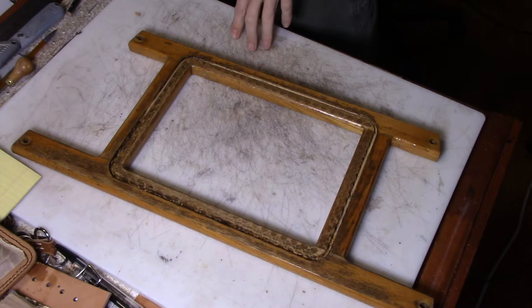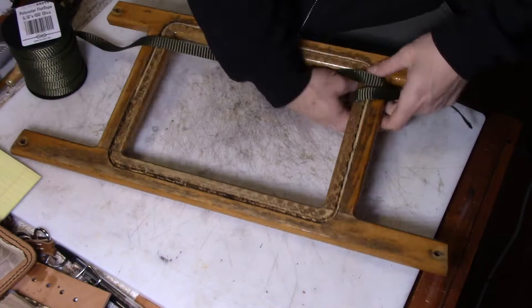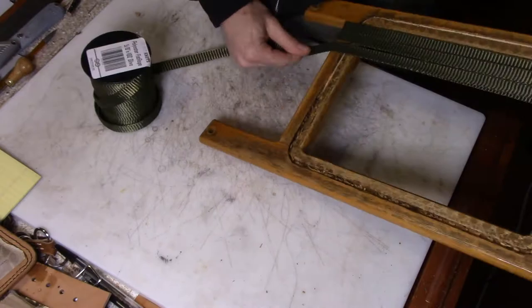This video is a little bit different project than what I normally do. So this is out of a canoe. This is a seat that was wicker and it fell apart. It belongs to my parents and so they asked me if I could do something to fix it up.